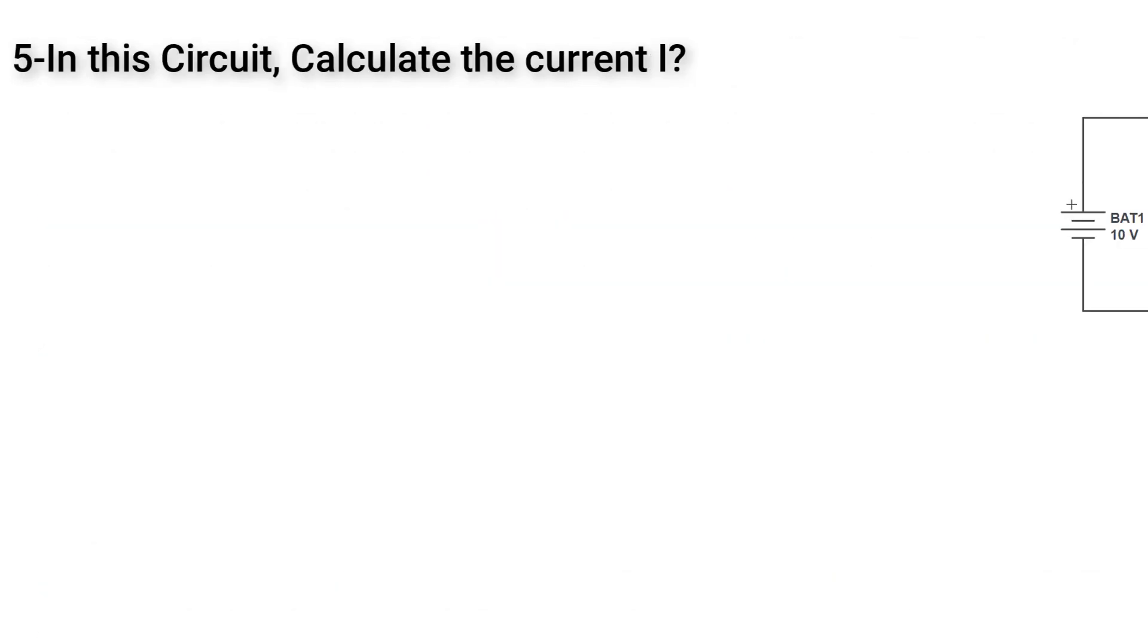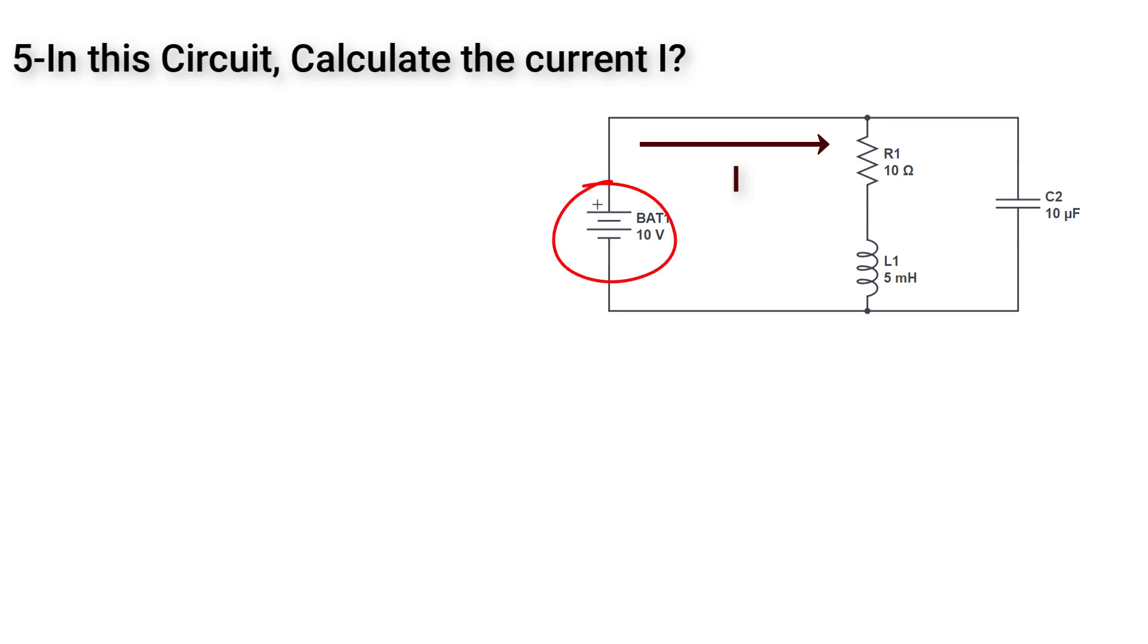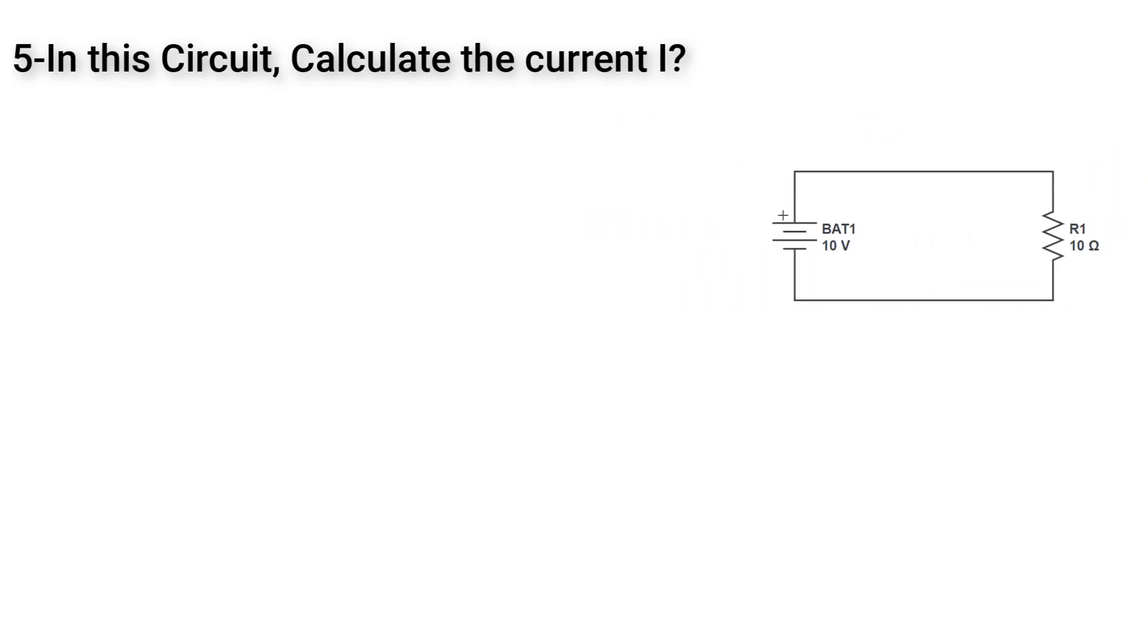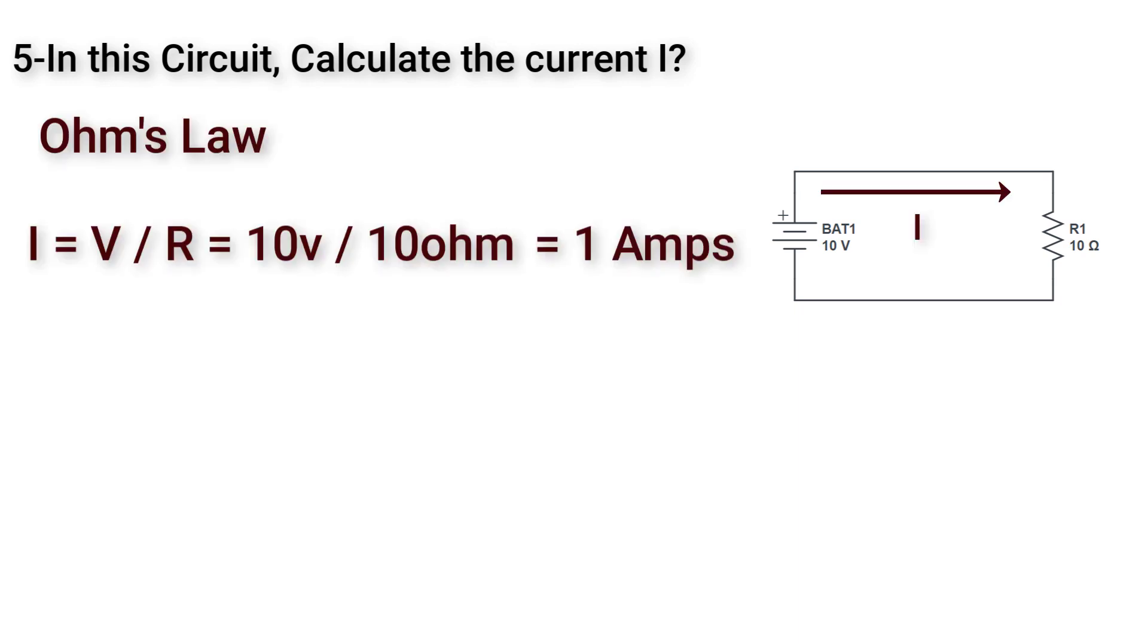Let's walk through another question. In this circuit calculate the current I. This is a simple question yet tricky one. We have here a DC power supply. So in normal state the capacitor will be open circuit and the inductor will be short circuit. So the actual circuit here is a 10V DC voltage supply connected to a 10 ohm resistor. Using Ohm's law, the current I will equal 1 amp.